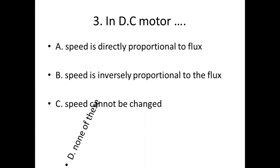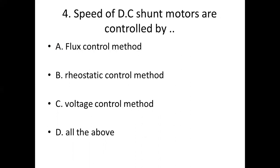Third bit: In a DC motor — Option A: speed is directly proportional to flux. Option B: speed is inversely proportional to flux. Option C: speed cannot be changed. Option D: none of these.